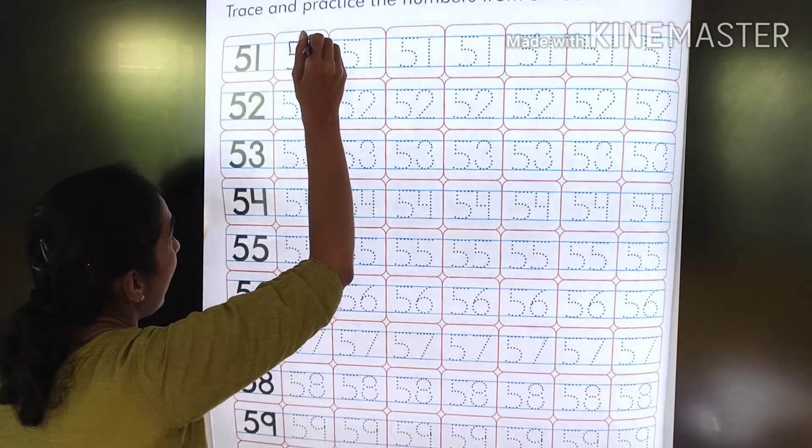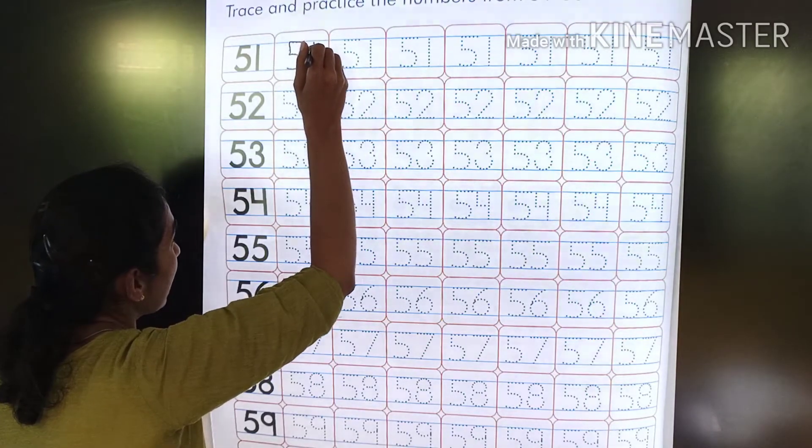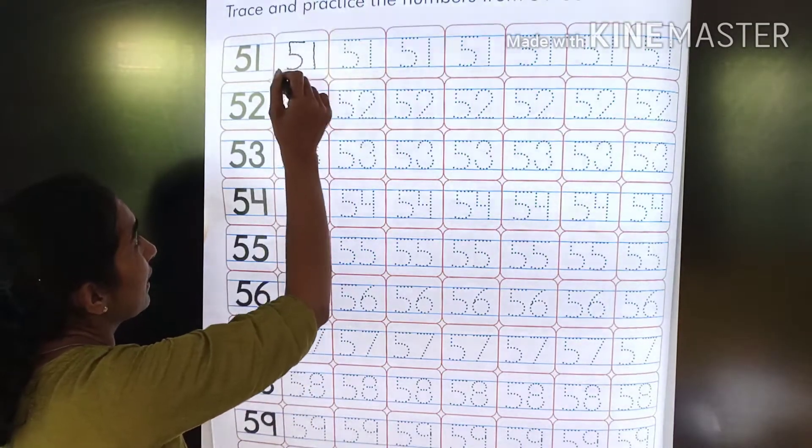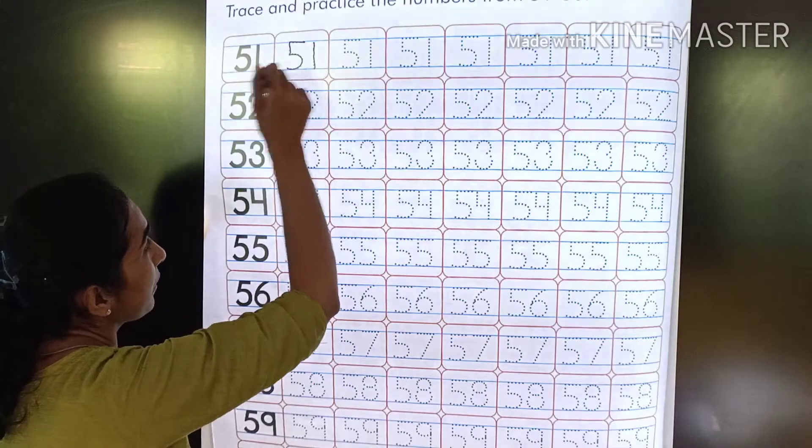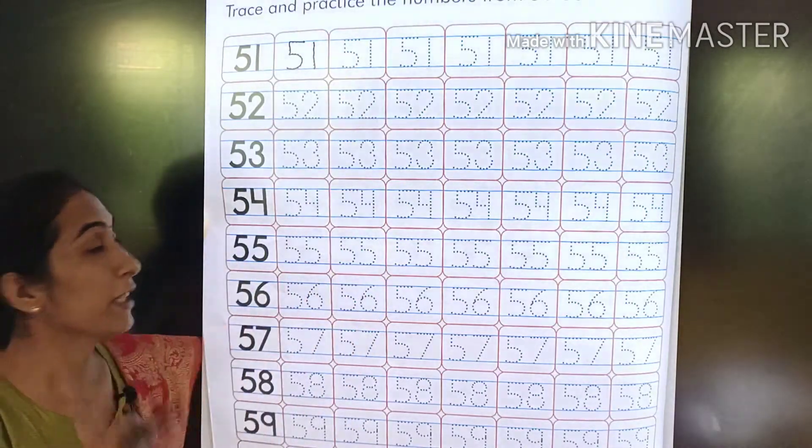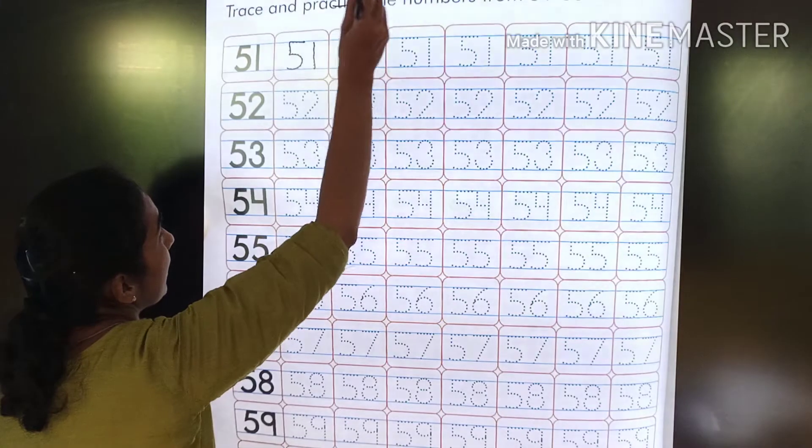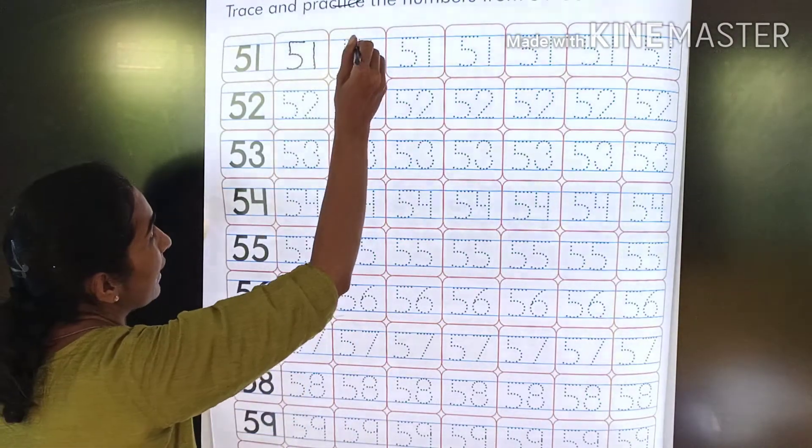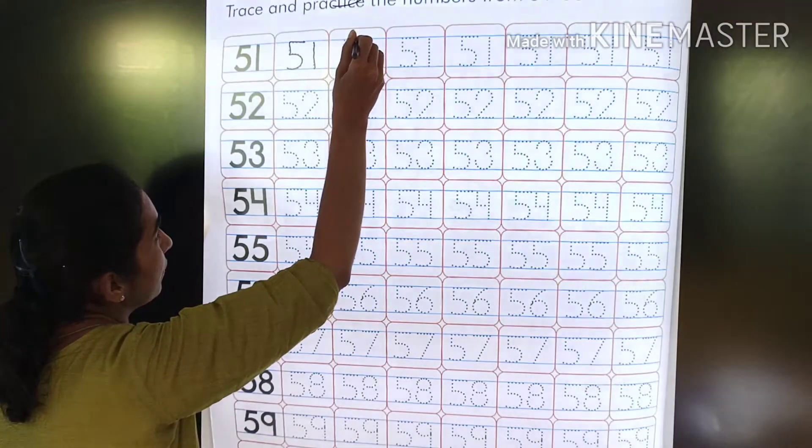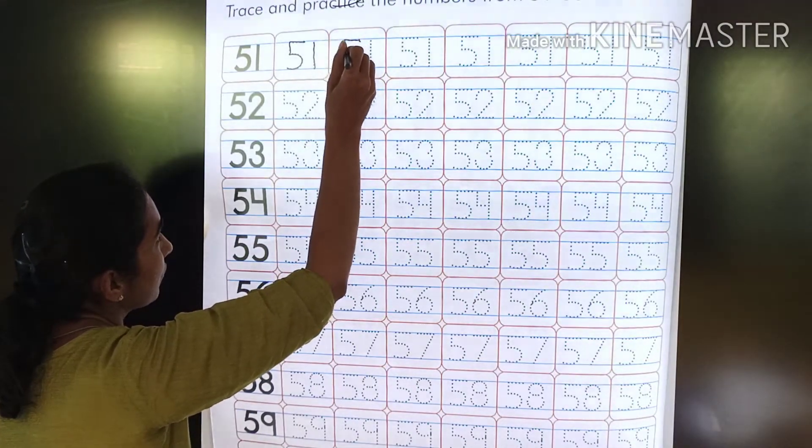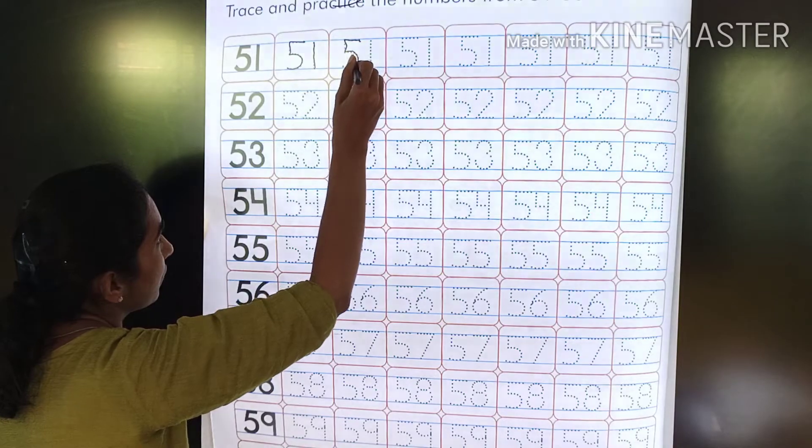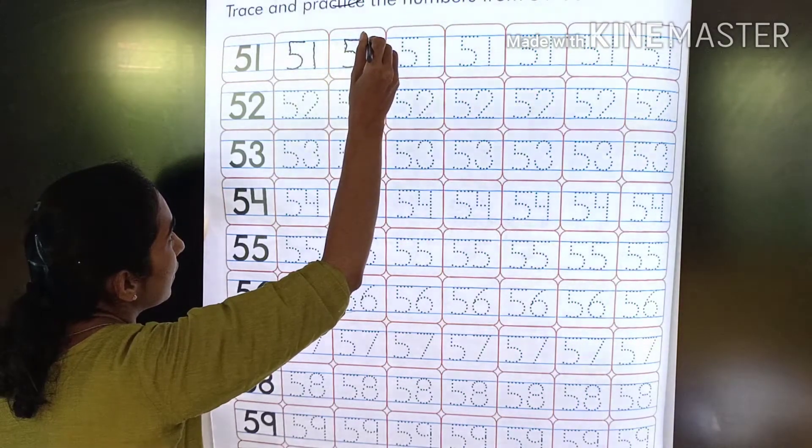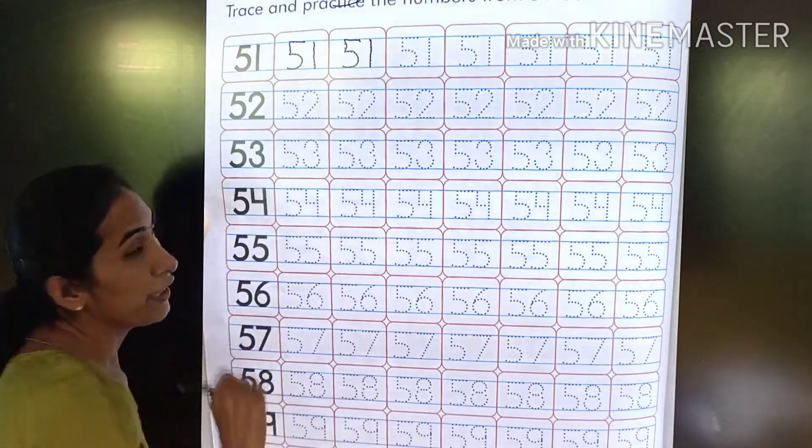This is 5 and this is 1, standing line that is 1, 51, 1. Both numbers should be on the same line. One should not be small and one big. Not like this, you have to write it like this.